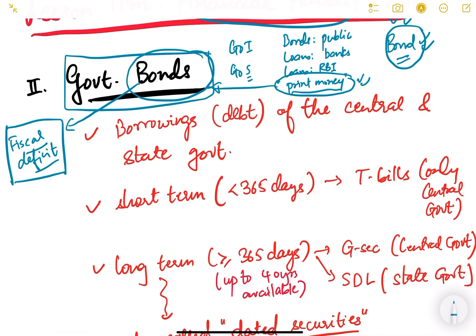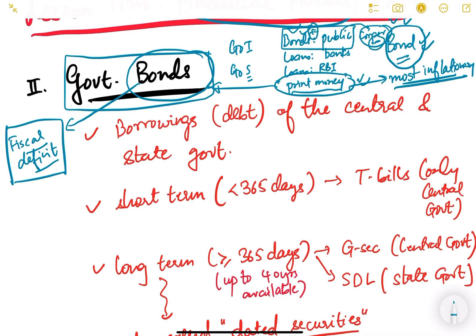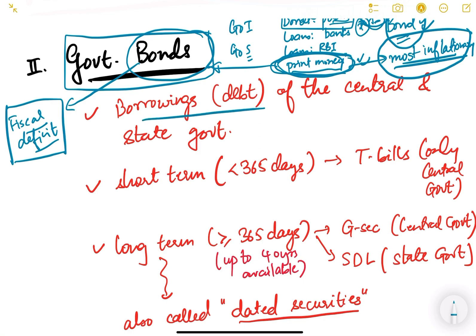Printing new money is the most inflationary in nature because new money is being generated in the economy. When government takes money from the public in the form of bonds, the public is redirecting money from the corporate sector to the government — so somebody loses and somebody gains. But when the government prints new money, corporates are not losing and government is also getting money, which is why it is the most inflationary.